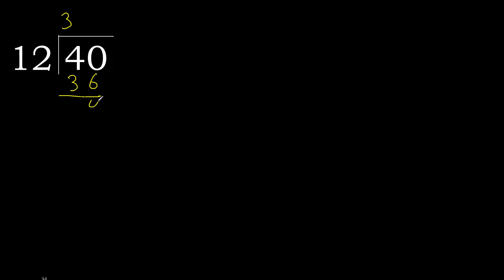Subtract. 4 is the remainder. That is not a whole number, therefore complete. Always complete with 0. Here, with the decimal point — 0 point.